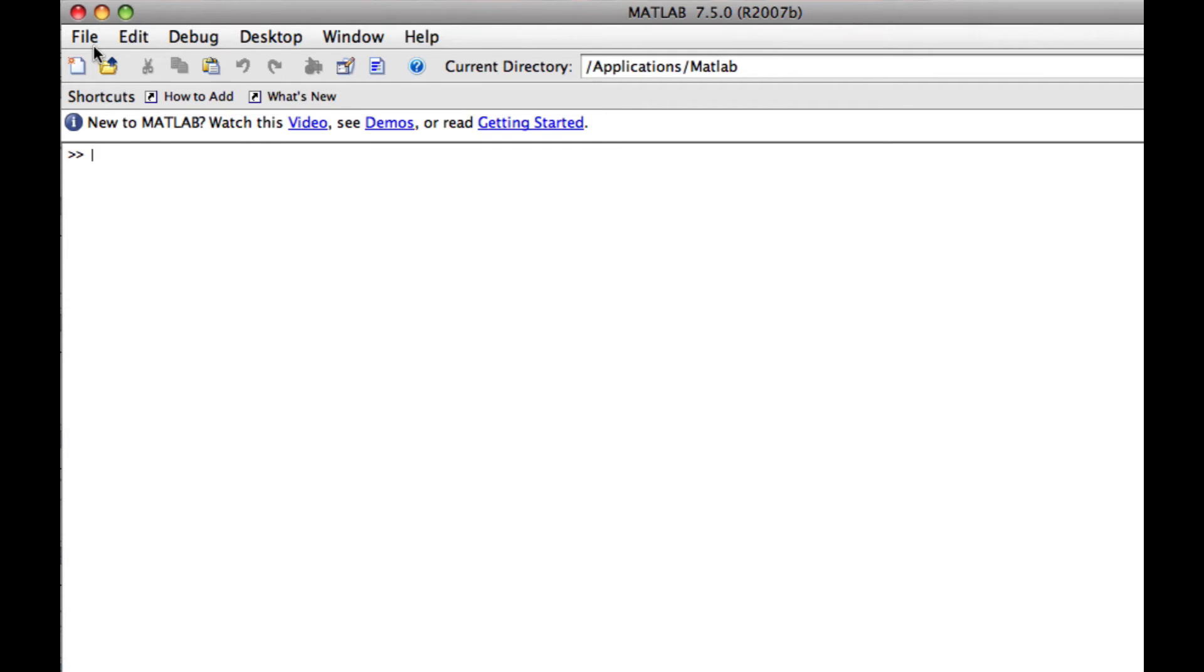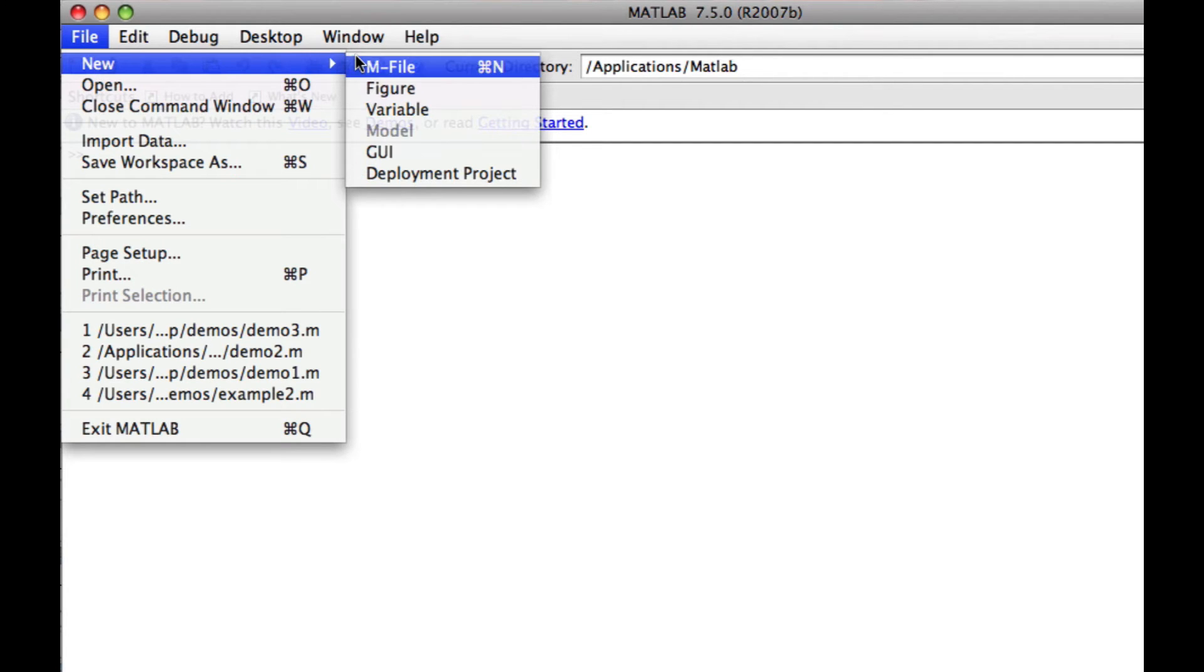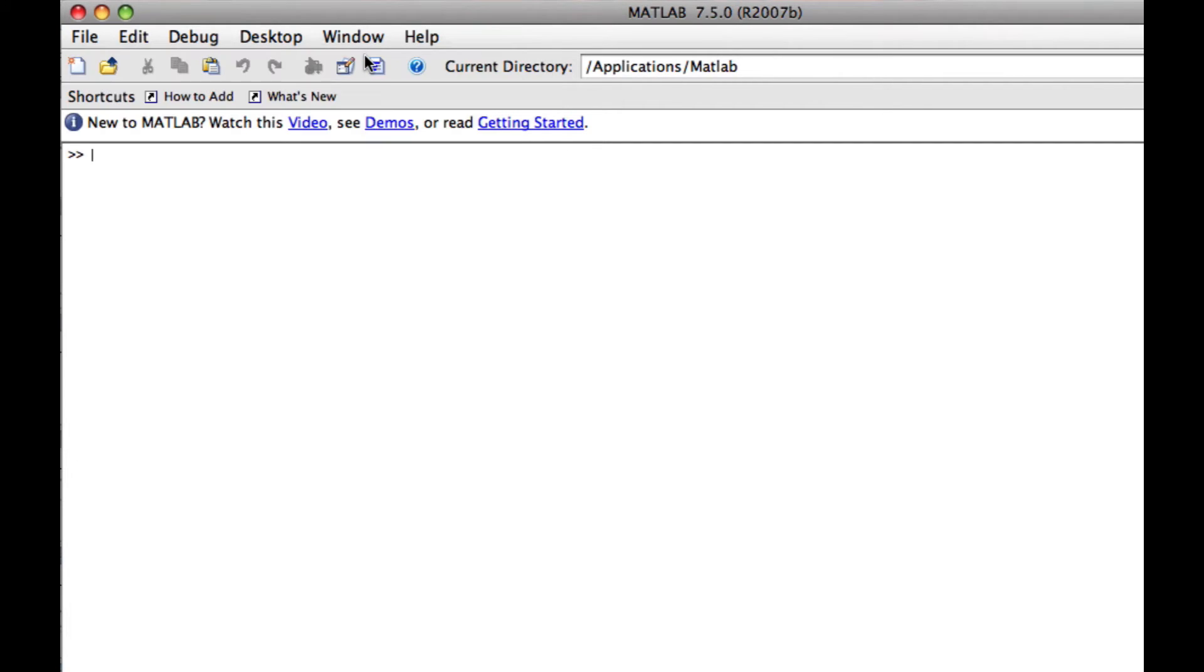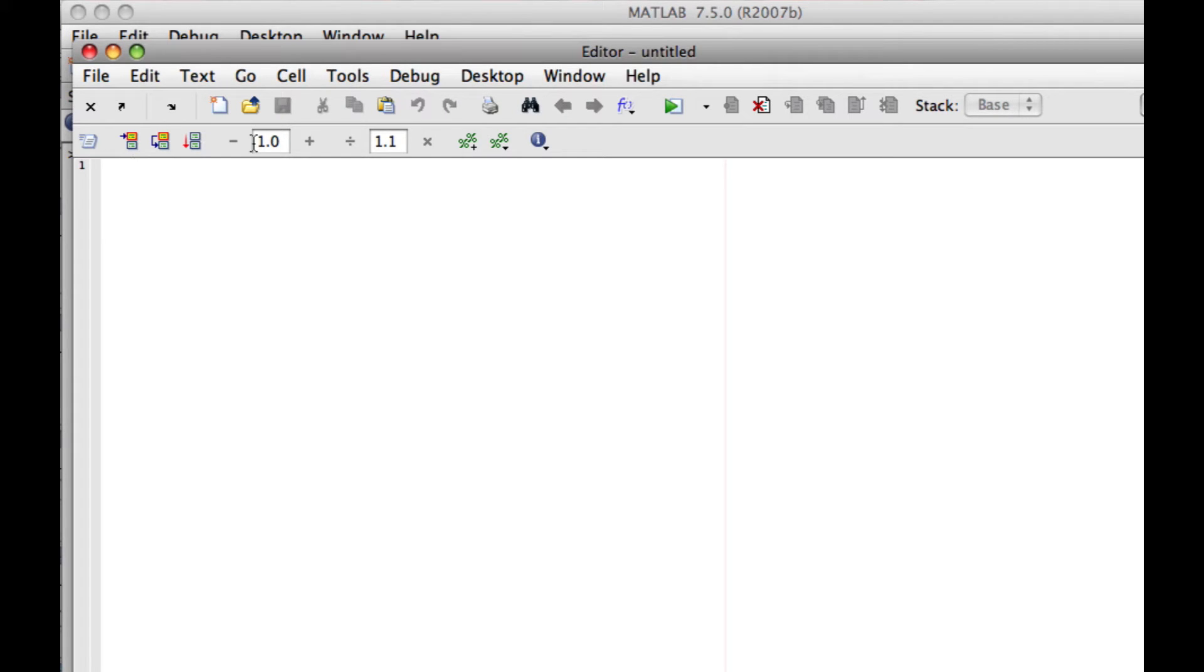The first thing I'll do is that I'll clear my command window to make that clean. Thereafter, I'm going to create an m-file where I write my coefficients again. That was A, and then we have the y, 10 and 2.